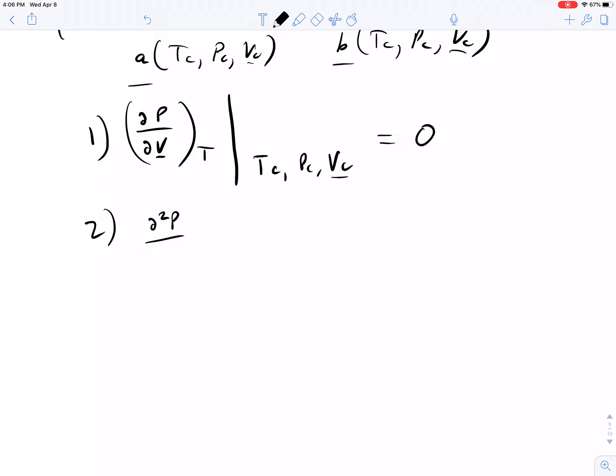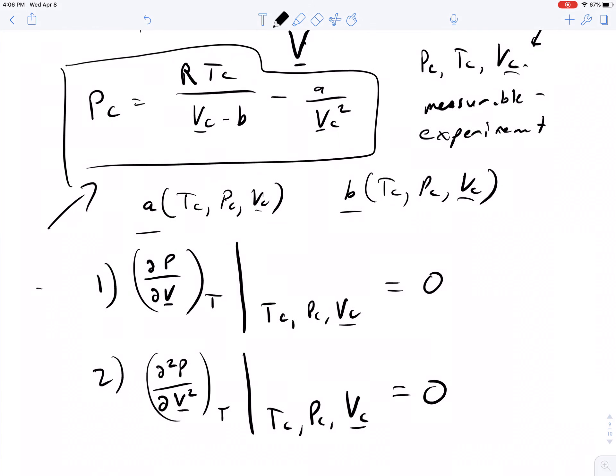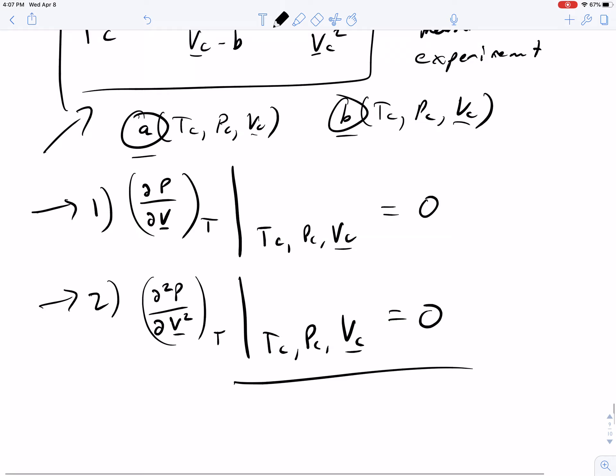This gives us two more equations. Del squared P by del V squared at constant temperature evaluated at TC, PC, VC equals zero. So we have now one, two, three equations we can work with to identify the parameters A and B in terms of this one measurable position for each of our materials. This greatly simplifies, and we can use this as a way to understand the state of the material through the principle of corresponding states.